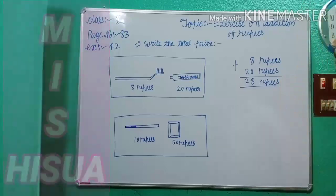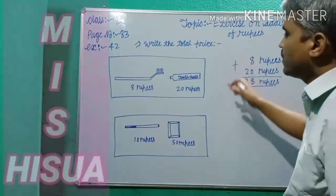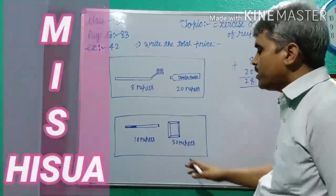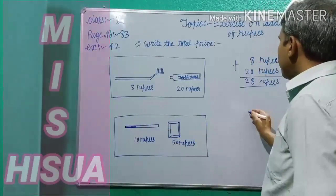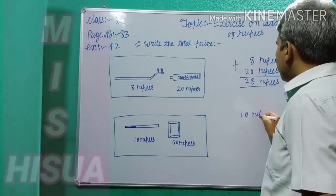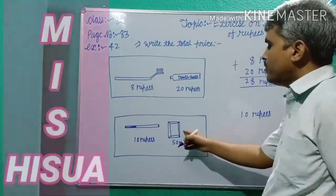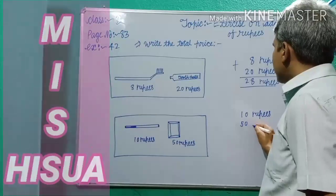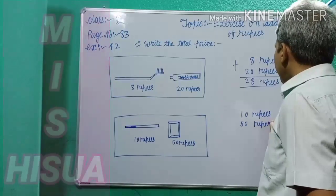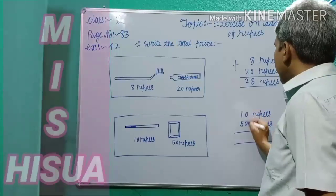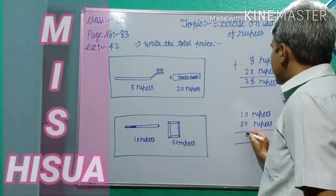Now the second question on the related topic. What is the price of pen? 10 rupees. So you write down 10 rupees. And what is the price of books? 50 rupees. You write that here.